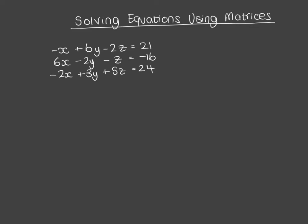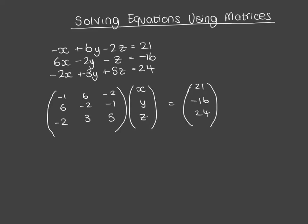Let's imagine this is a set of three simultaneous equations that we want to solve. First, I need to write this as a system of matrices. So I would write this as the matrix: (-1, 6, -2; 6, -2, -1; -2, 3, 5) times (x, y, z) equals (21, -16, 24).